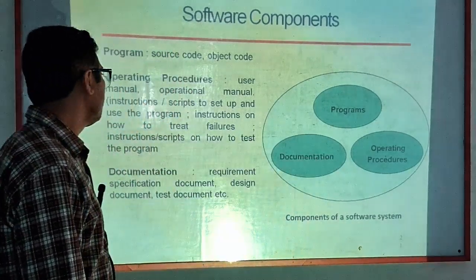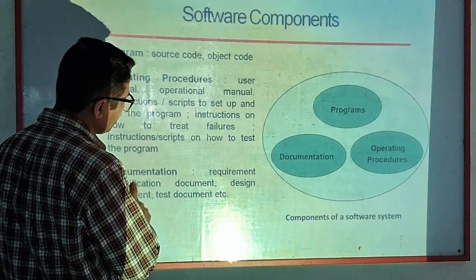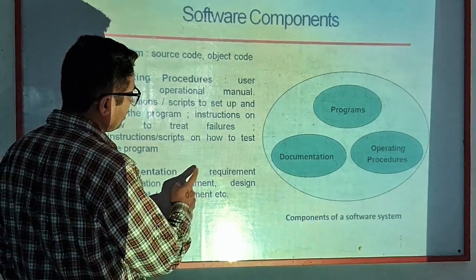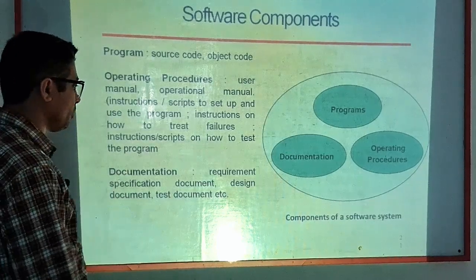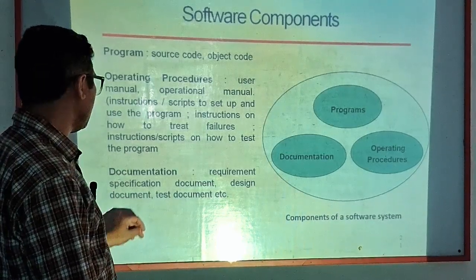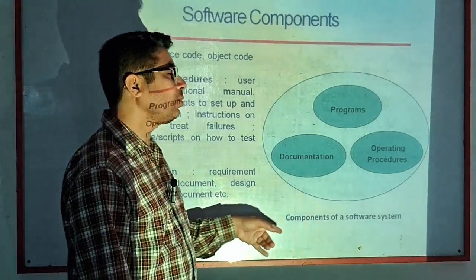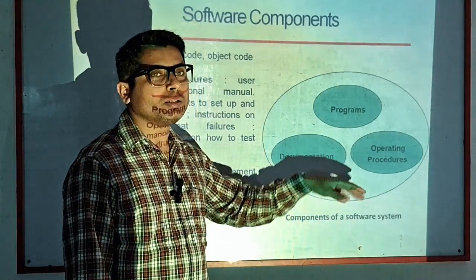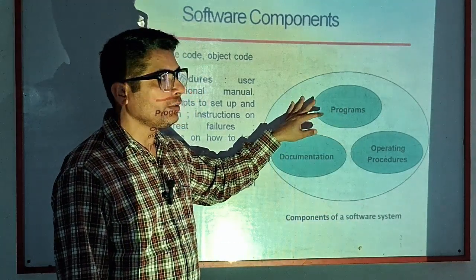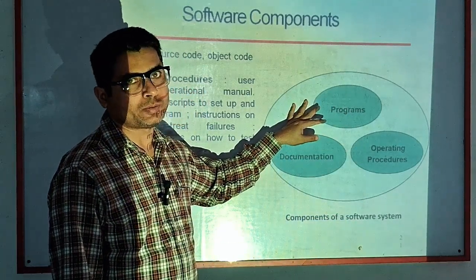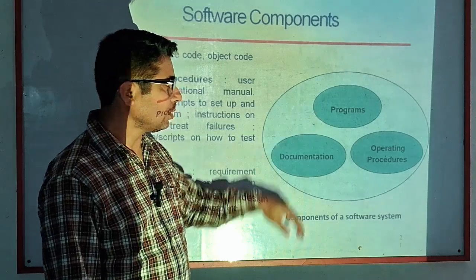The third component is documentation, which includes requirements, specification documents, design documents, and test documents. Combined, these are the three main components of a software system.